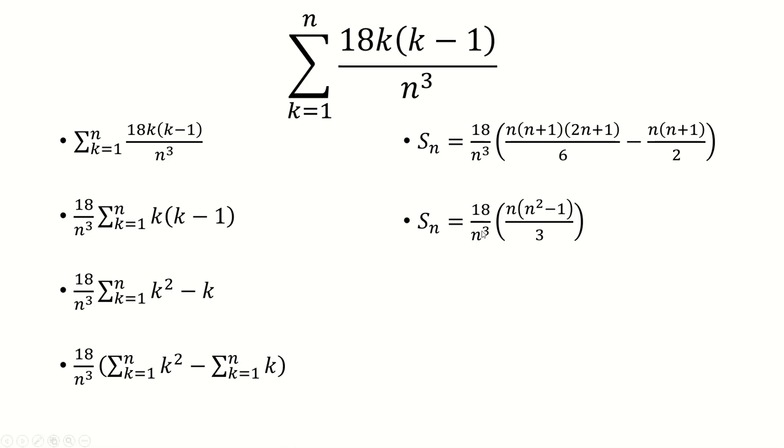The n and the n cubed will simplify to 1 over n squared, and then 18 over 3 is just 6. So we have 6 times n squared minus 1 over n squared.